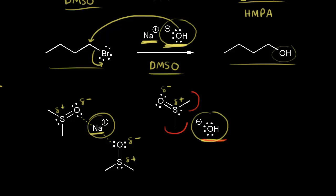If we had used something like water — a polar protic solvent — the oxygen is partially negative and the hydrogens are partially positive. A polar protic solvent would interact with our nucleophile, solvating it and essentially decreasing the effectiveness of our nucleophile. That's why polar protic solvents don't work as well if you want an SN2 mechanism. A polar aprotic solvent increases the effectiveness of our nucleophile, therefore favoring our SN2 mechanism.